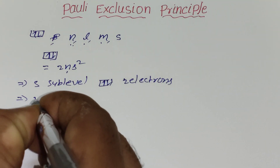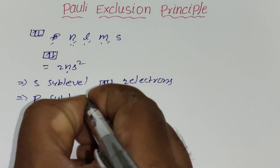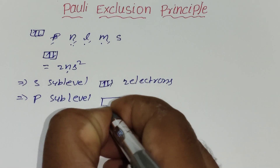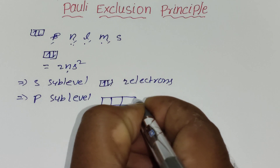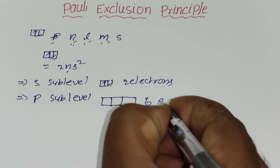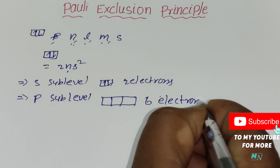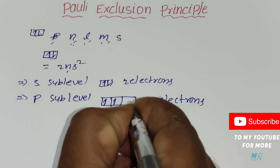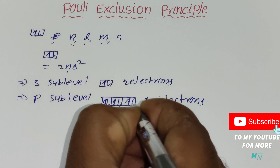In the p sublevel, there are three orbitals. Since each orbital holds two electrons, the p sublevel contains six electrons in total. Out of the six, three electrons are in the clockwise direction and the remaining three are in the anticlockwise direction.